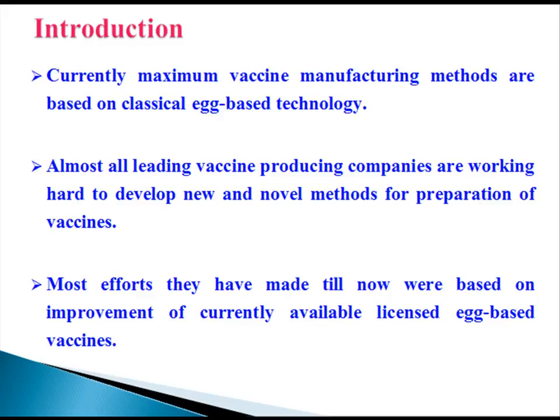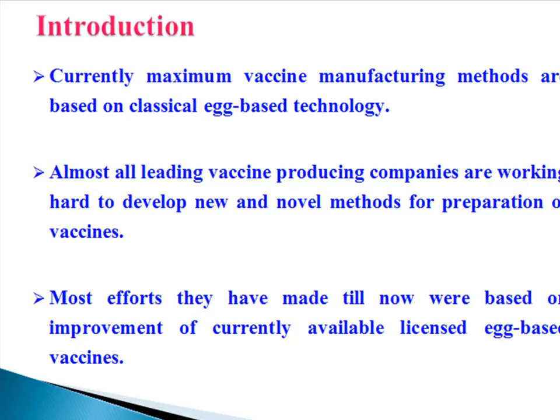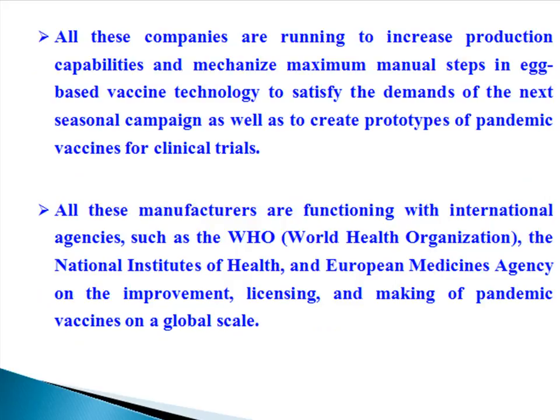Almost all leading vaccine producing companies are working hard to develop new and novel methods for preparation of vaccines. Most efforts made till now were based on improvement of currently available licensed egg-based vaccines. These companies are running to increase production capabilities and mechanize maximum manual steps in egg-based vaccine technology to satisfy demands of the next seasonal campaign, as well as to create prototypes of pandemic vaccines for clinical trials. All these manufacturers are functioning with international agencies like the World Health Organization, the National Institute of Health, and European Medicines Agency on the improvement, licensing, and making of pandemic vaccines on a global scale.